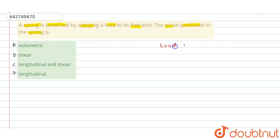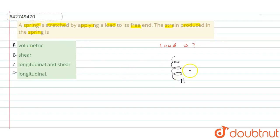Given that a load is applied to the free end of the spring — suppose we have a spring like this, with a free end, and at this free end we have applied a load. Let's say this load is downward.